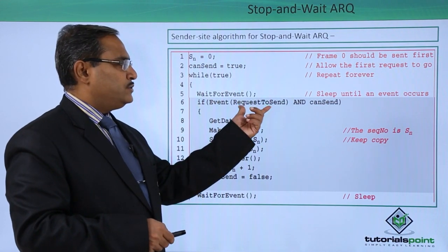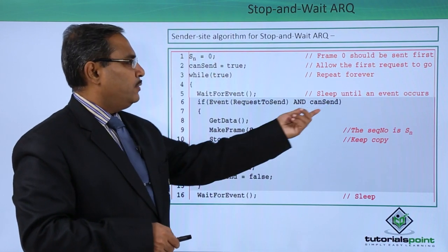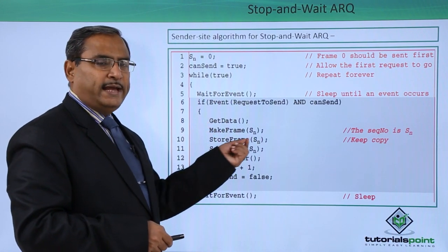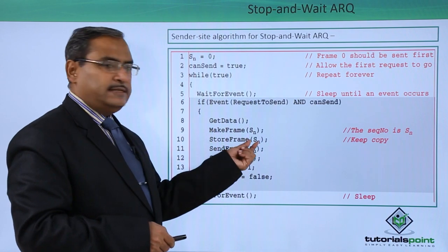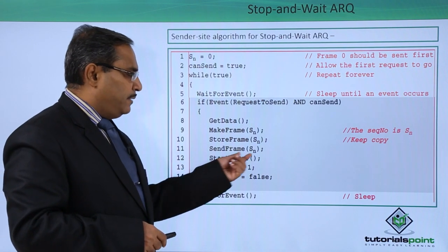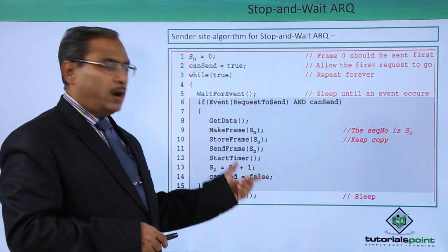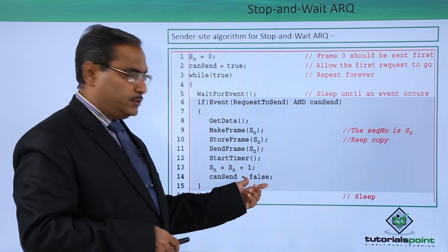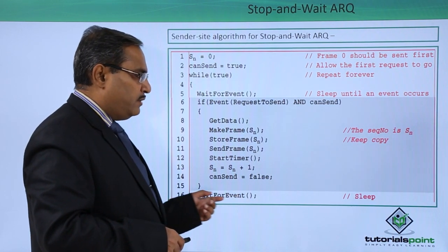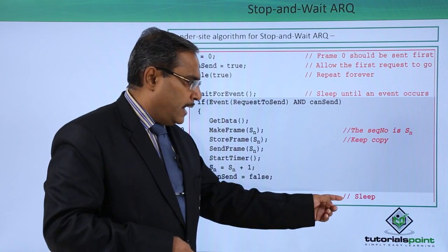If event is 'request to send' and can_send is true, then: get data from the network layer, make a frame with sequence number sn, store the frame against sn for future retransmission, send frame sn, start the timer, then set sn = sn + 1 and can_send = false, and wait for the next event. The sequence number is stored in sn, a copy is kept, then sleep.